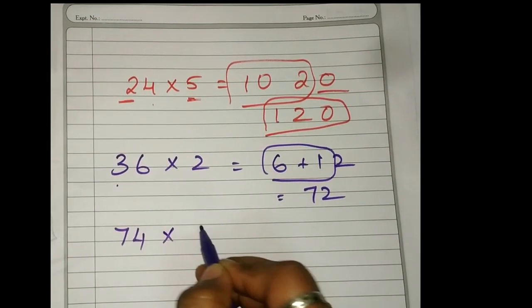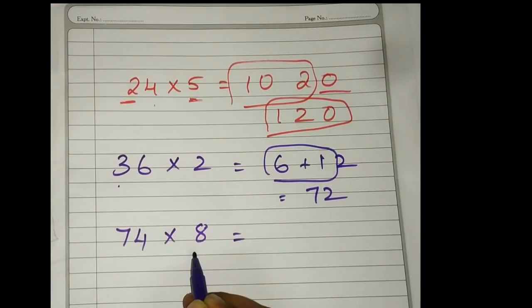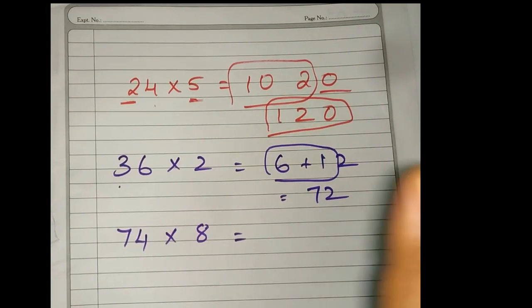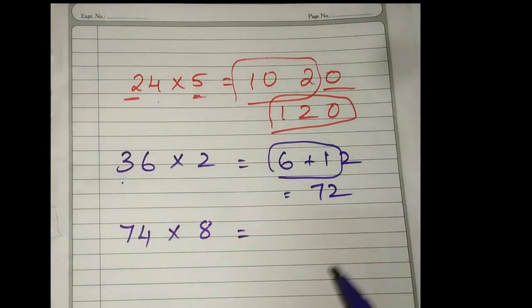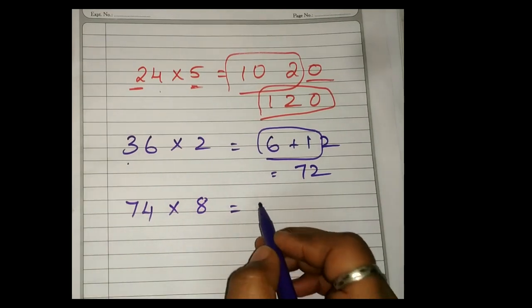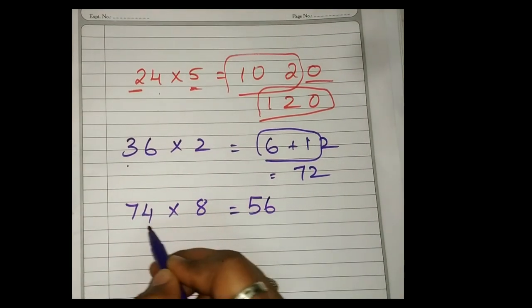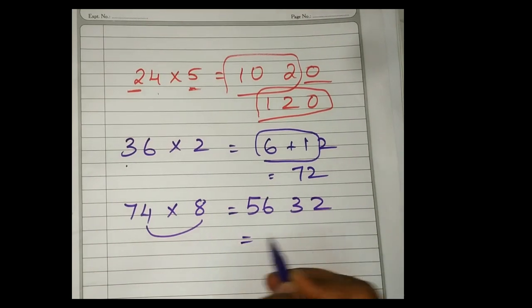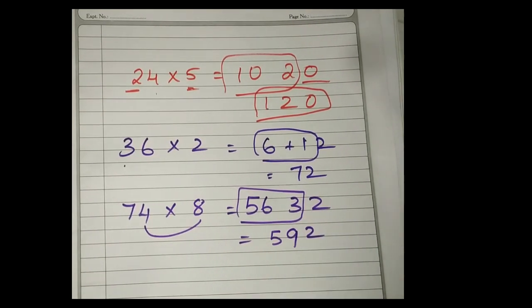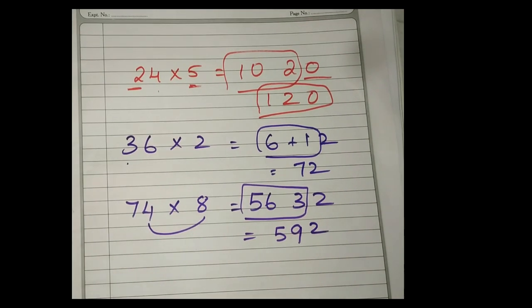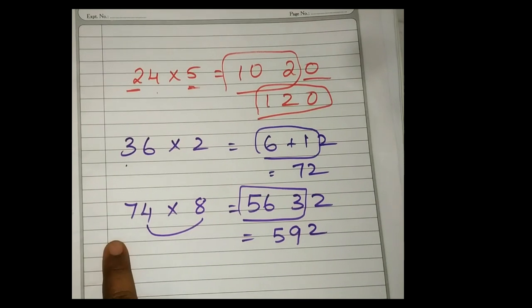For example, if I have given 74 into 8, what you should do? For that I told you, you should know 2 to 9 tables thoroughly. Am I clear? If you know, then only you can try attempting mental calculations very fast. 8 sevens are 56, and 4 eights are 32. Ones digit? 56 plus 3, it is nothing but 59. So 592.